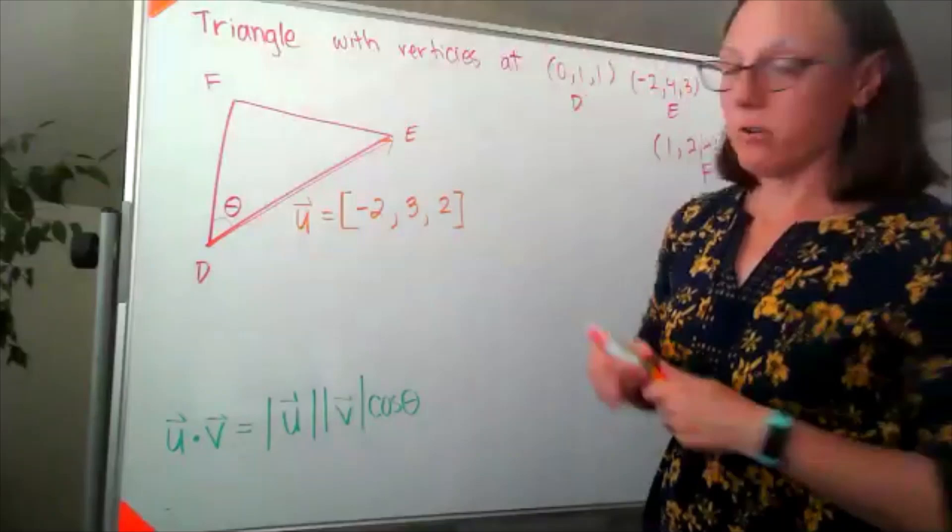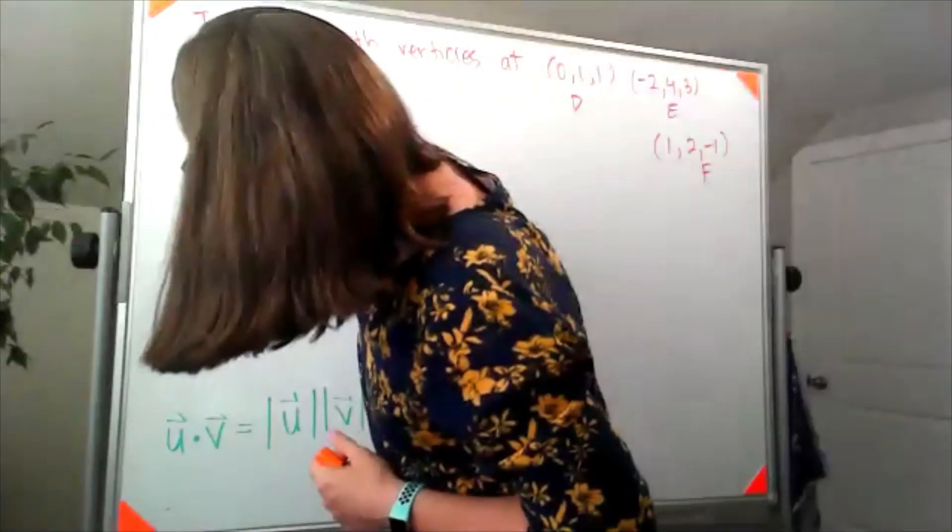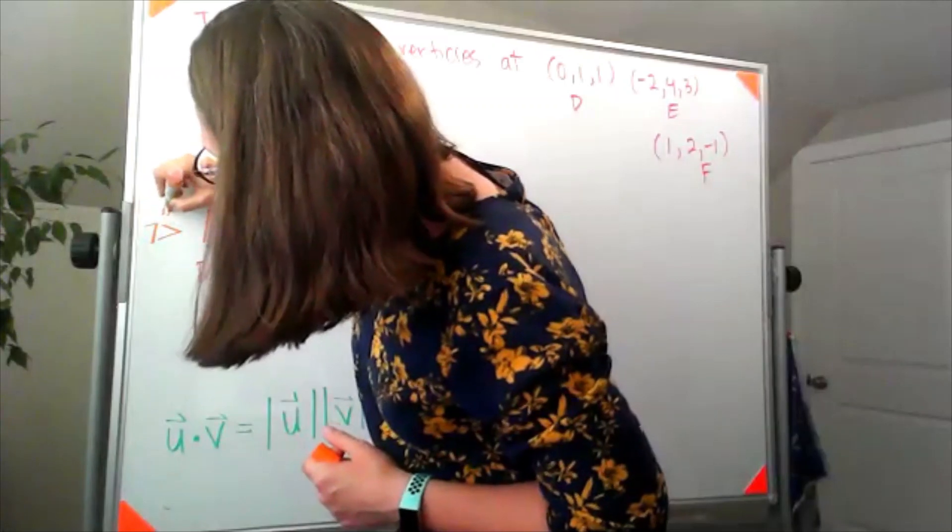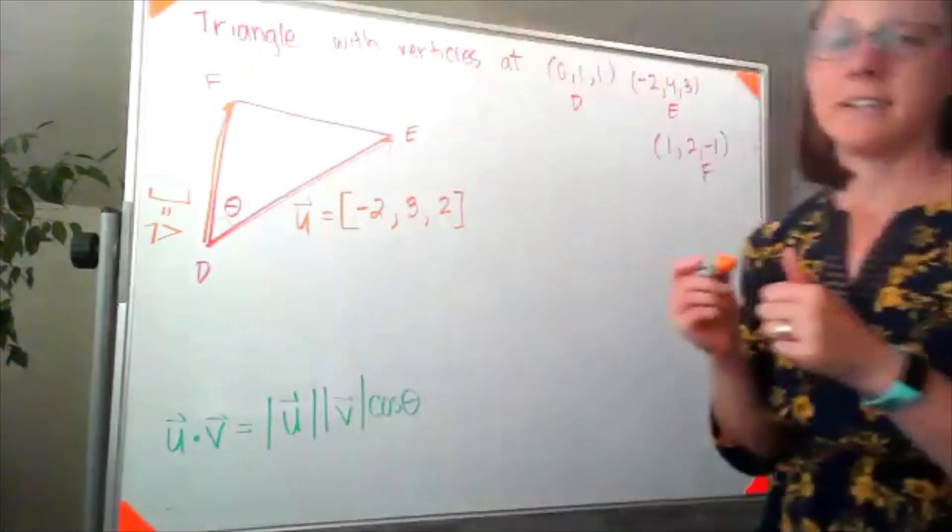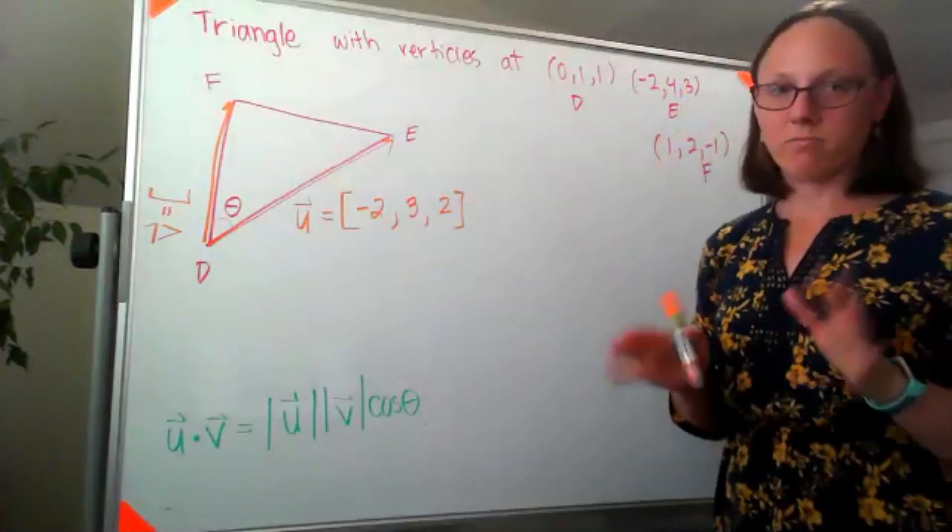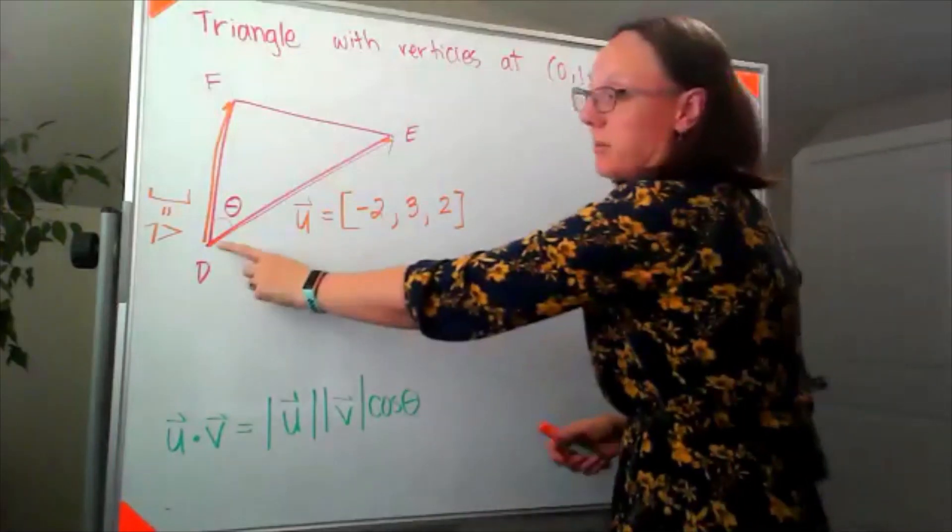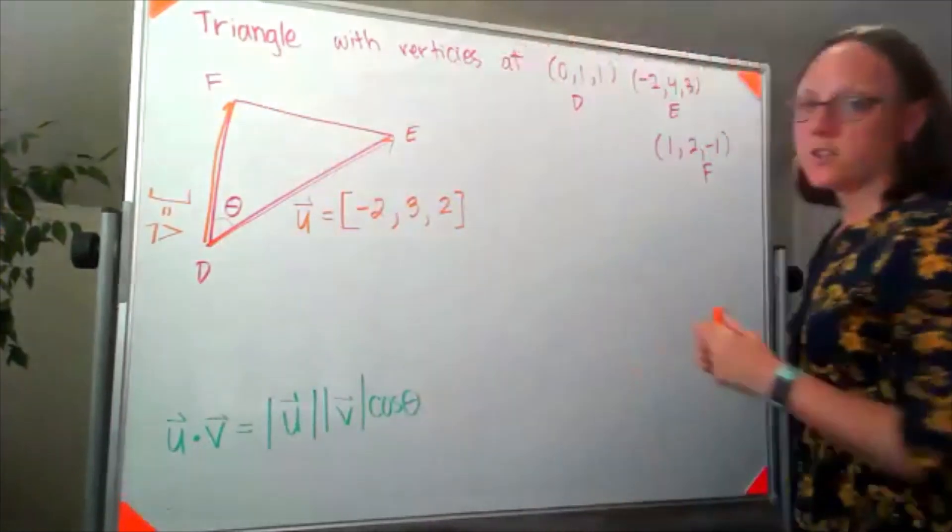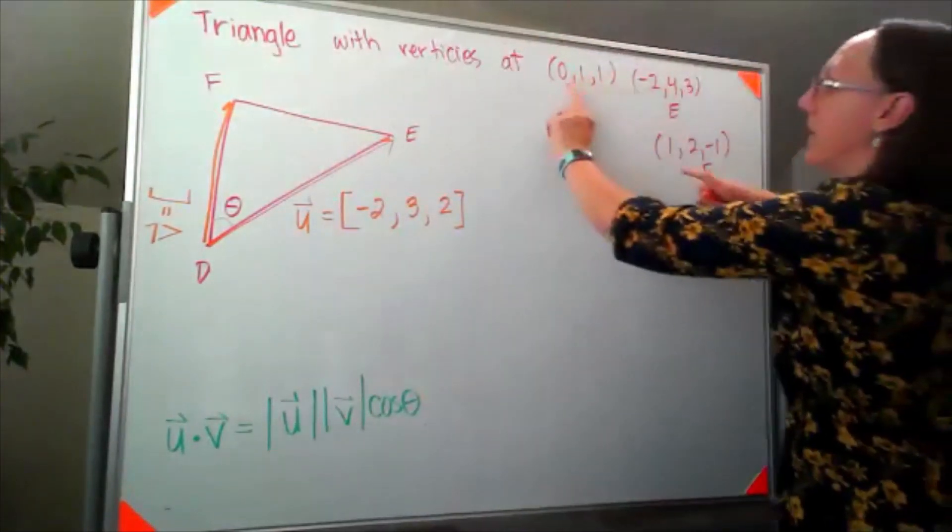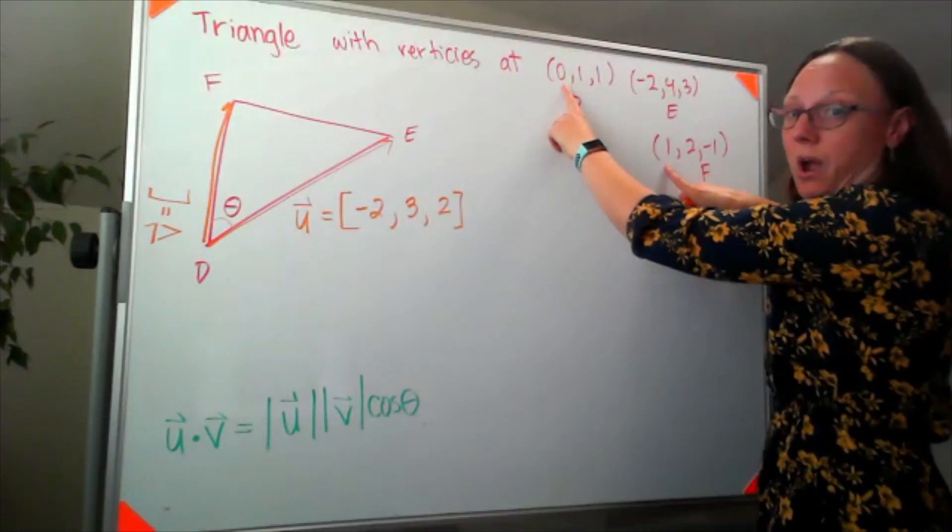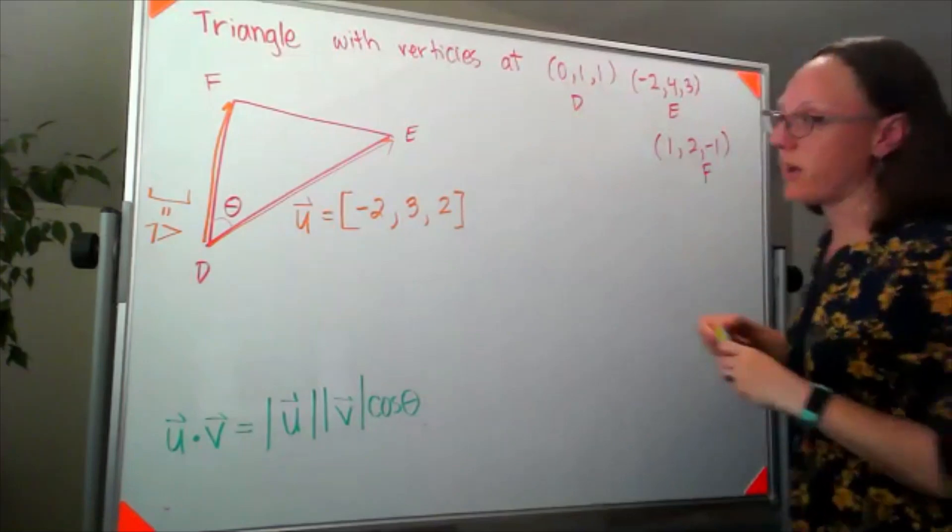Now let's think about our vector over here. That's going to be my v vector. So now I'm standing at the point D and I have to arrive at the point F. I'm standing at an x value of zero, I need to get to one, so I need to move positive one in the x direction.